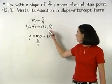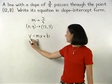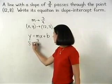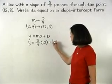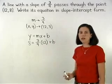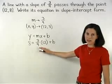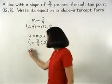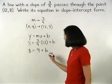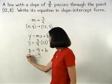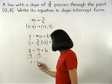So we substitute twelve in for x and eight in for y. And we have eight equals three-fourths times twelve plus b. Solving for b, three-fourths times twelve is nine. So we have eight equals nine plus b. And subtracting nine from both sides, negative one equals b.